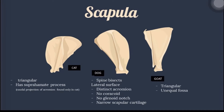The supraglenoid tubercle is the process near the cranial aspect of the glenoid cavity for the attachment of biceps brachii muscles. Comparing the scapula of different animals: in cats, it is triangular in shape and has a suprahamid process, which is a caudal projection of the acromion only found in cats. In dogs, the spine bisects the lateral surface, it has a distinct acromion, no coracoid, no glenoid notch, and a narrow scapular cartilage.